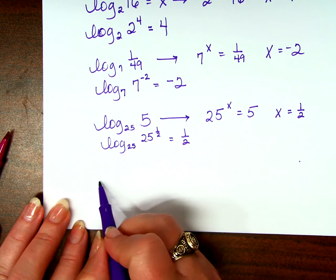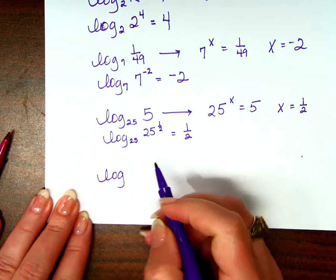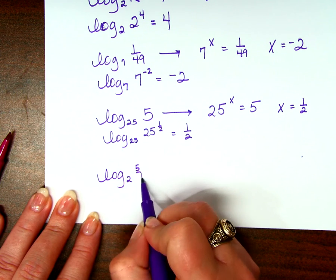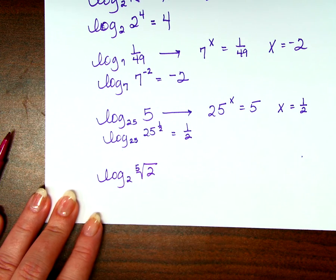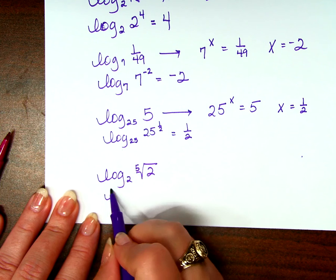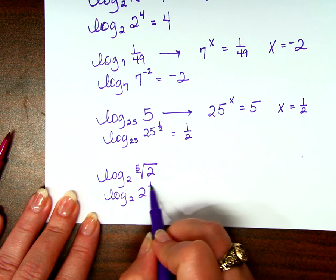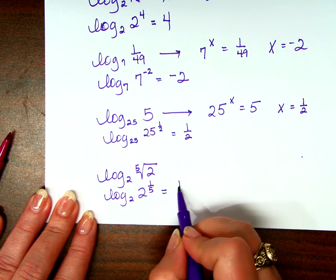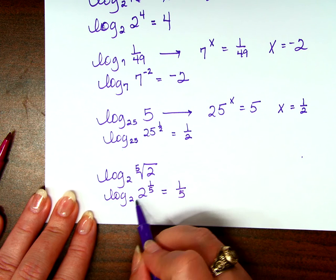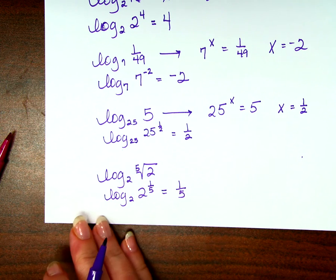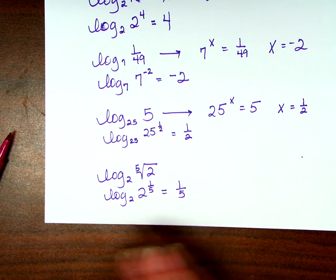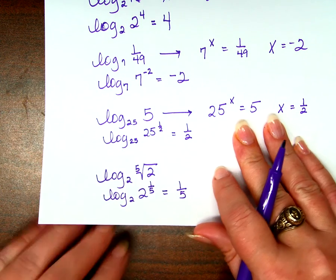Log base 2 of the 5th root of 2. That could be log base 2 of 2 to the 1/5th power, which would just equal 1/5th, since the bases are the same.